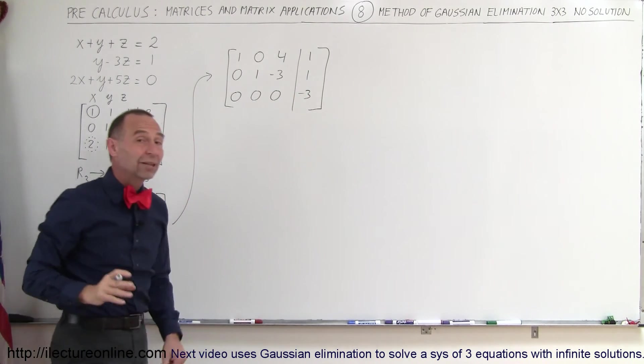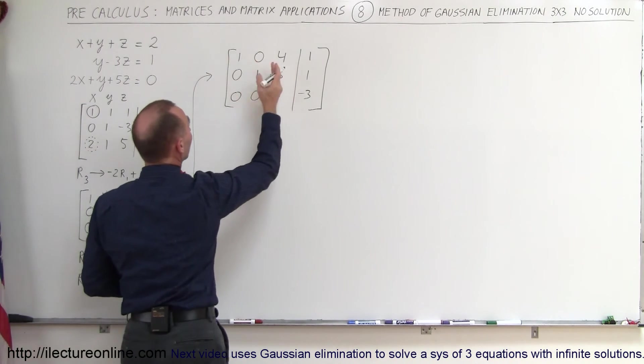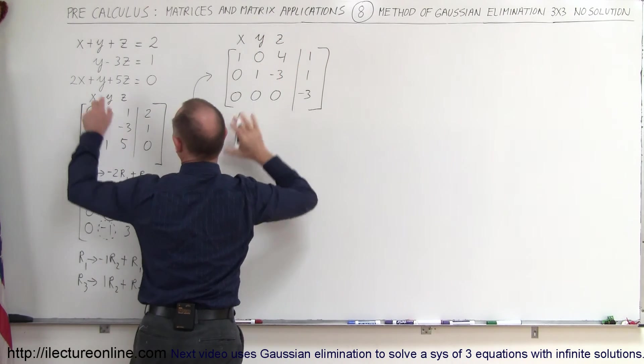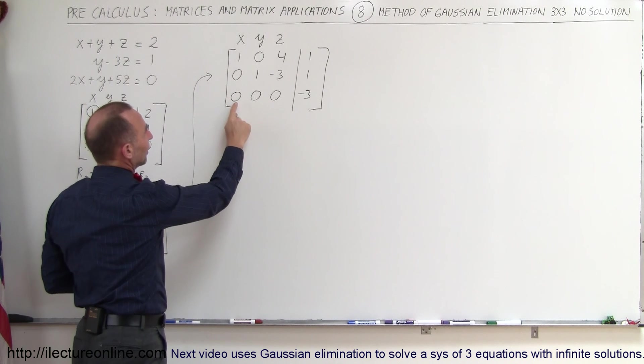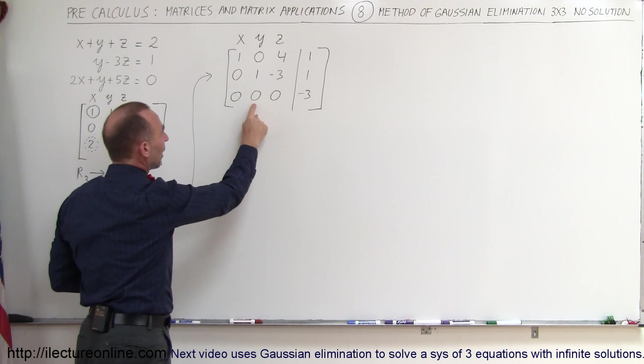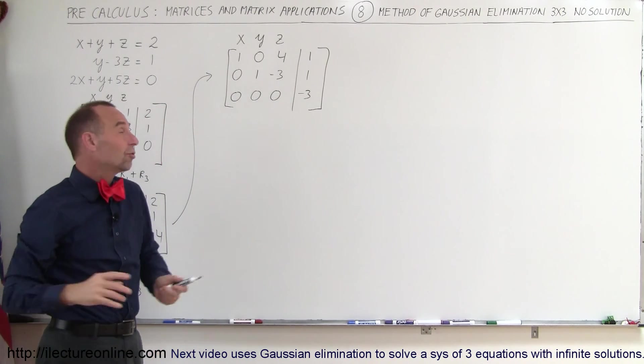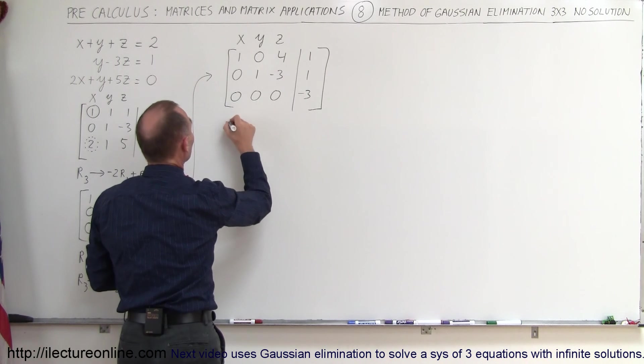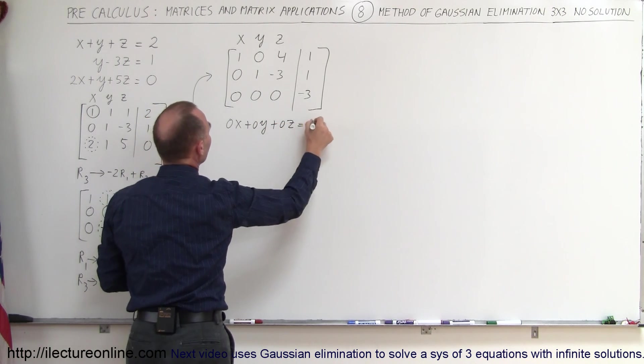Now here is where we begin to realize we have a problem. Because remember that these columns represent the x, the y, and the z, the variables inside of our three equations. And here, what this is telling me is that we have 0x plus 0y plus 0z equals negative 3. That's an impossible situation. We cannot have 0 equals negative 3. Basically, this says 0x plus 0y plus 0z equals negative 3, or we can write 0 equals negative 3.